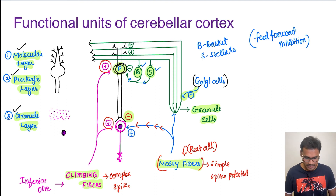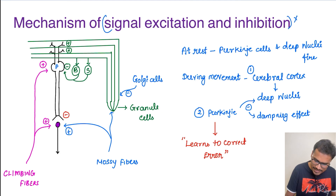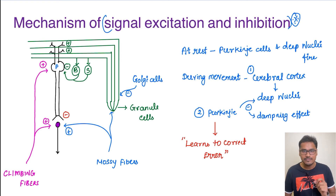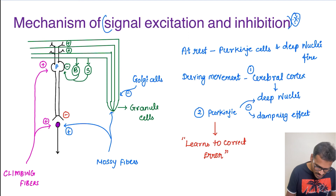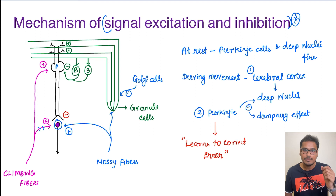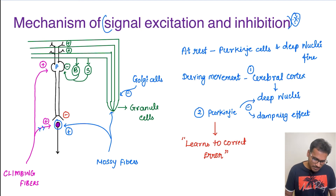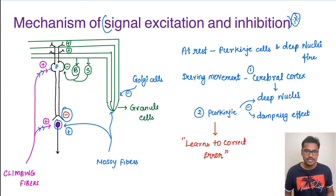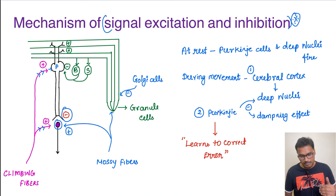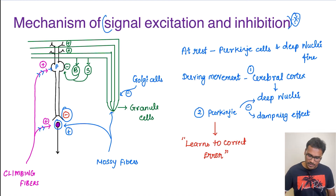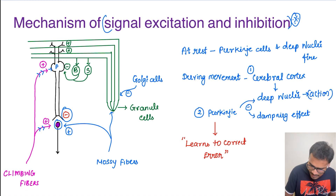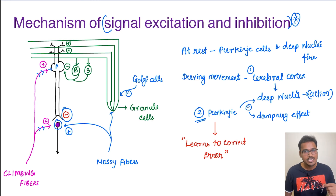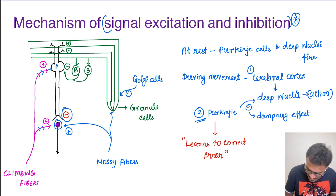Coming to the mechanism of signal excitation and inhibition — when climbing fibers are stimulated, there is an immediate impulse to the deep nuclei and motor correction is enhanced. Immediately after, the signal goes to the Purkinje, which in turn inhibits the deep nuclei. At rest, both the Purkinje cells and deep nuclei are firing, so there is not much movement. During movement, impulses from the cerebral cortex give a huge input to the deep nuclei, the action starts and the person performs the movement. Then immediately, Purkinje fibers inhibit the deep nuclei and stop the action — this is the dampening effect.